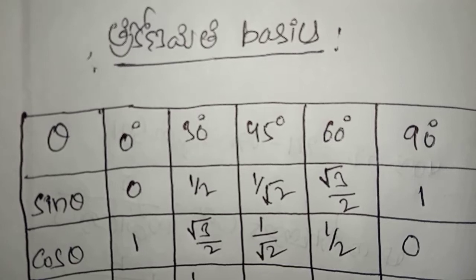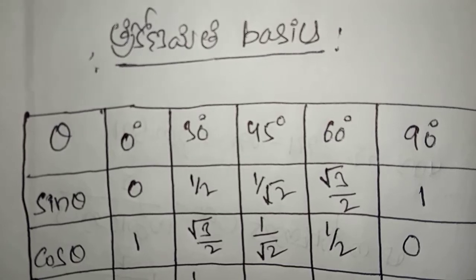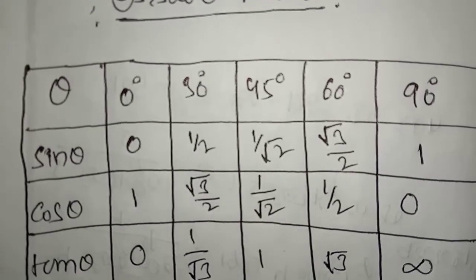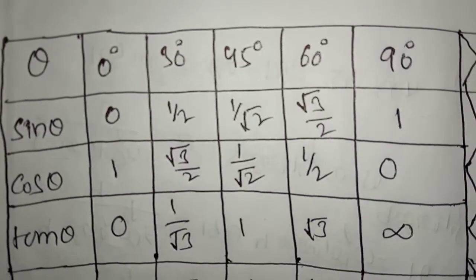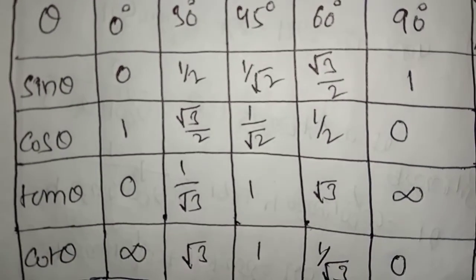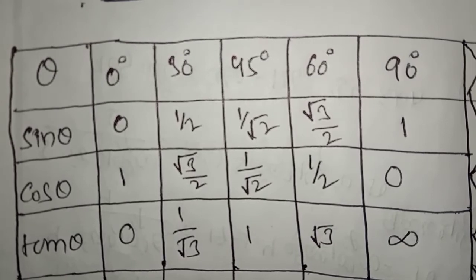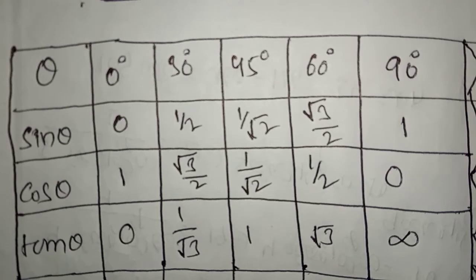If you want to see the basics of the video, we will do the basics. This is the tabular form and values. In general, sin theta is 0: sin 0, sin 30, sin 45, sin 60, root 3, sin 90. This is the tabular form.